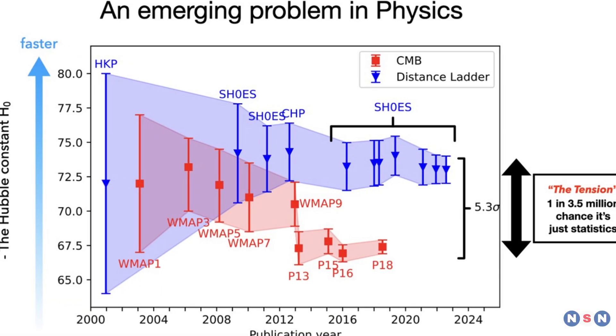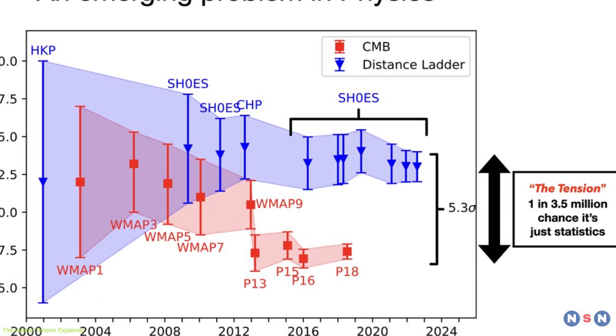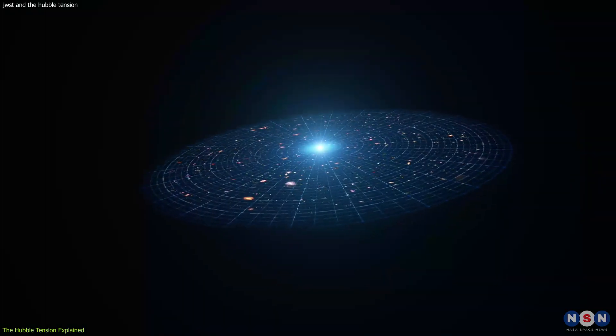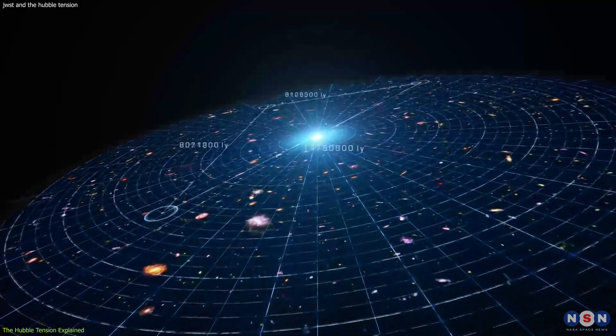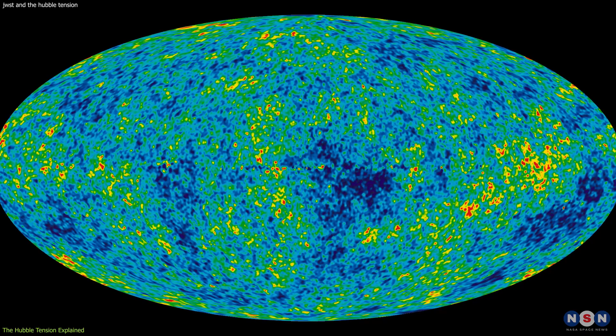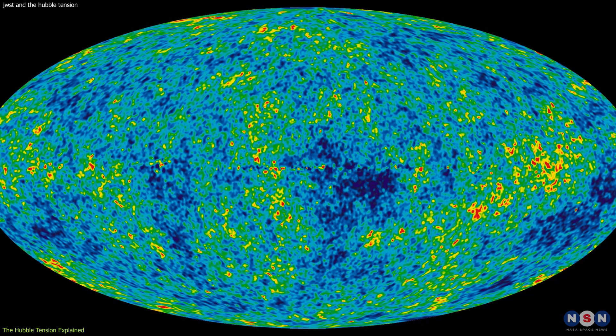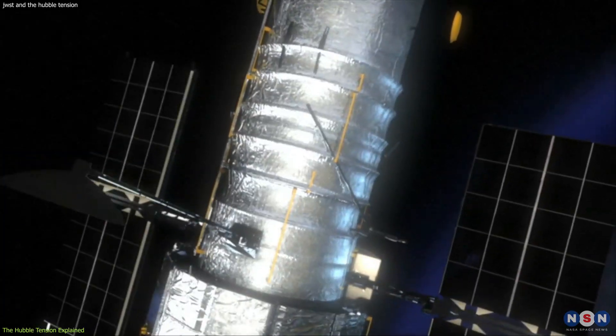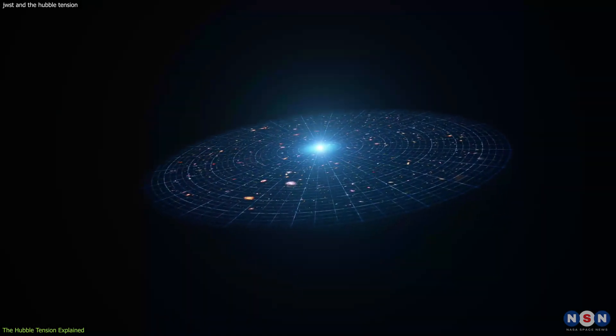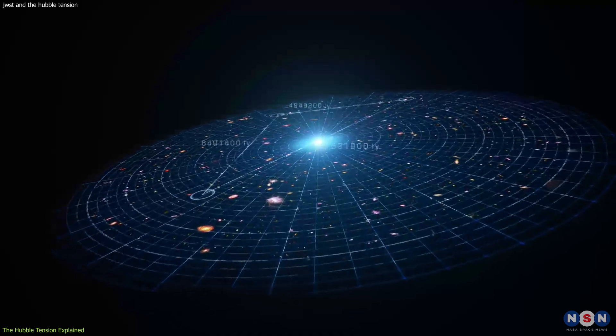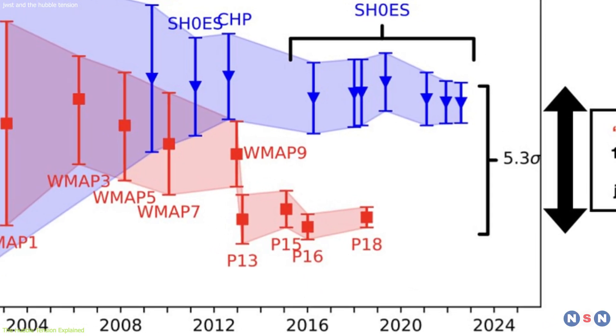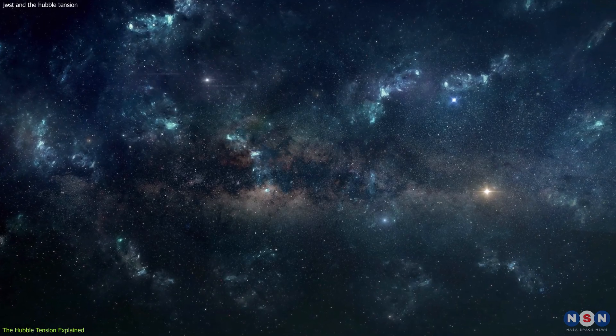At the heart of modern cosmology lies a perplexing inconsistency known as the Hubble Tension. This tension arises from a mismatch between the expansion rate of the universe measured directly through observations and the rate predicted by the cosmic microwave background radiation. Specifically, observations from the Hubble Space Telescope have consistently shown a faster expansion rate than expected from early universe conditions. This discrepancy raises a fundamental question: Are we missing a piece of the cosmic puzzle?